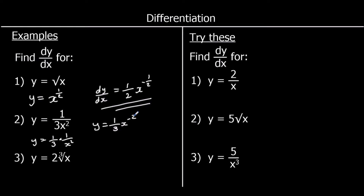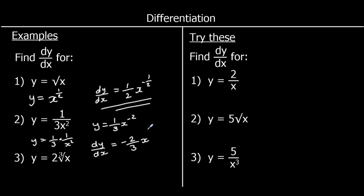So we can say this is the same as y equals one third x to the power of negative two — x to the power of negative two is the same as one over x squared. Now we can differentiate: times by the power, so one third times negative two is negative two thirds x, and take one off the power — negative two take away one is negative three.